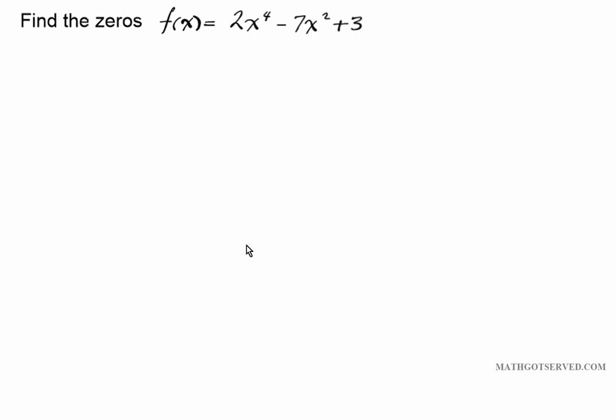So first thing we're going to do since we're finding the zeros, we're going to set what the function is equal to, to zero. So first step is to set 2x to the fourth minus 7x squared plus 3 equals 0.